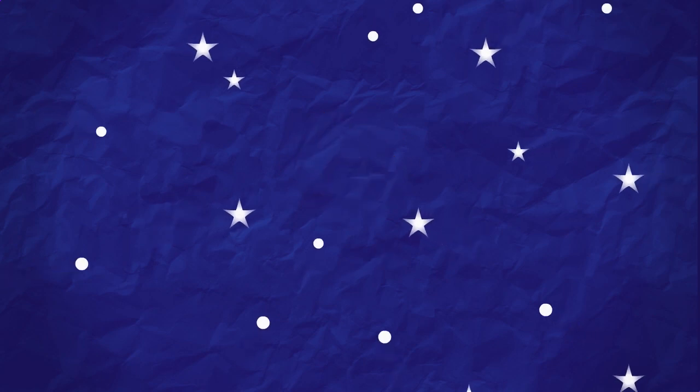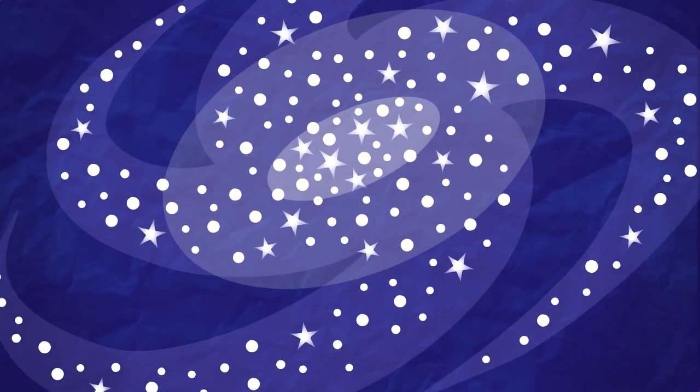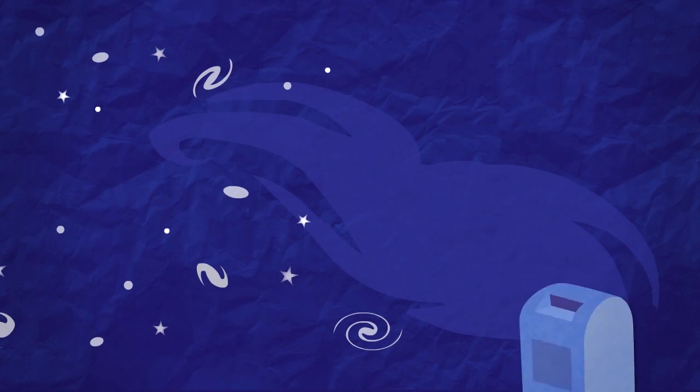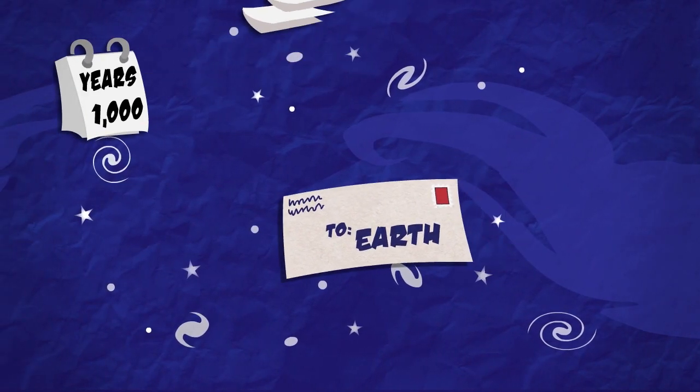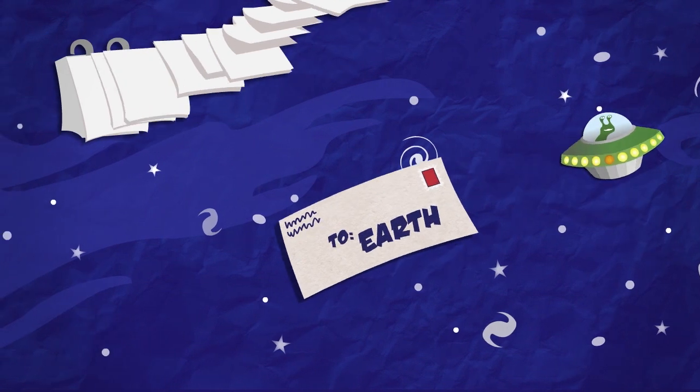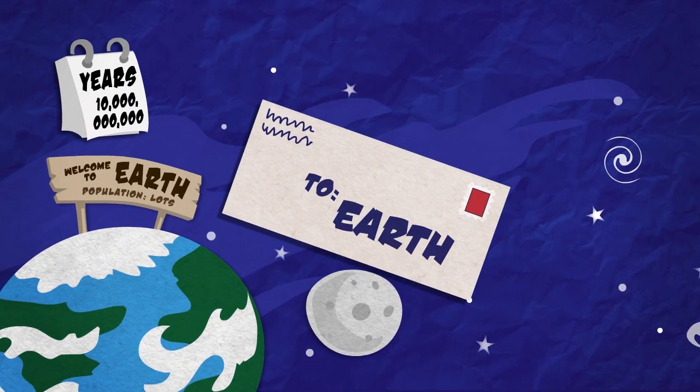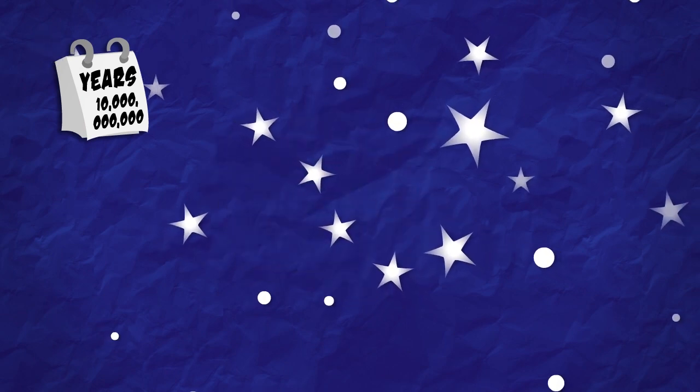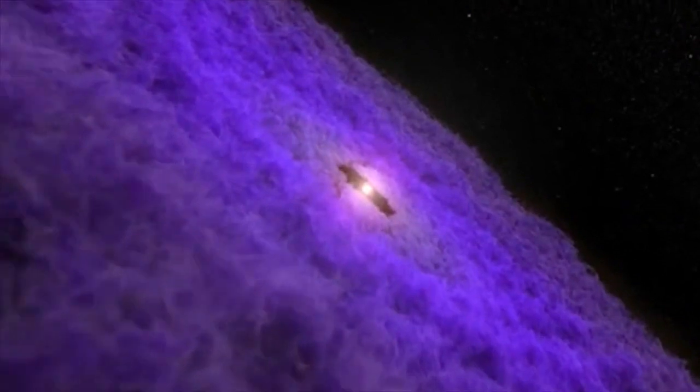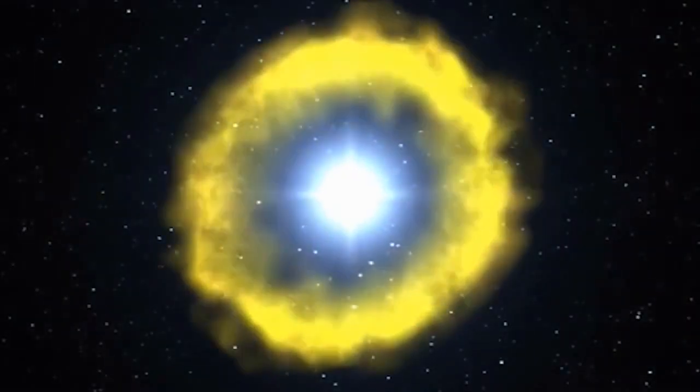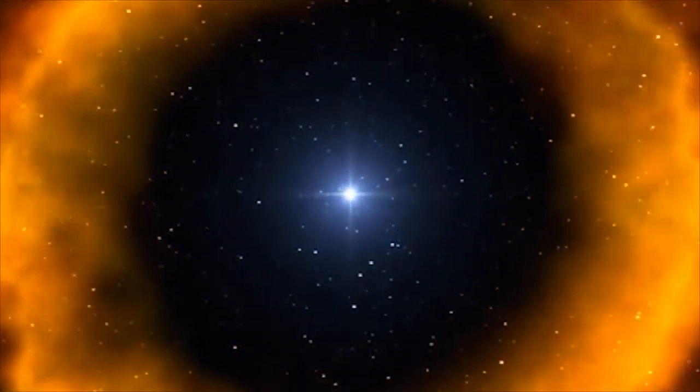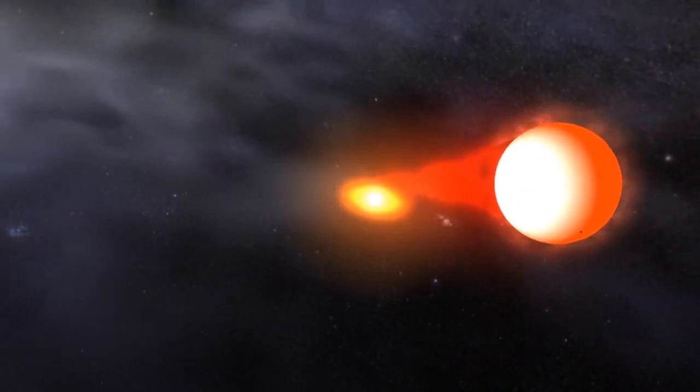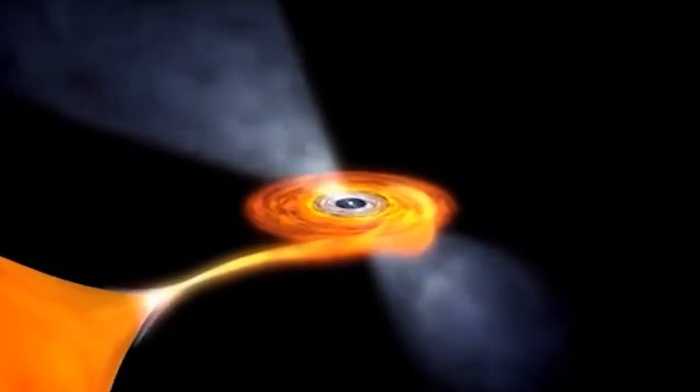We have three star endings, shall we say. We have getting eaten by a black hole, where it's kind of like the trash can of the universe, only garbage can't escape from the trash can. We have supernova. I believe there's like three and a half types of supernova - type one, type two, type three. And the third one, the least talked about one, is when stars merge.